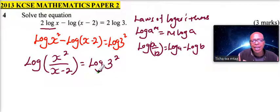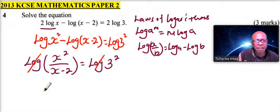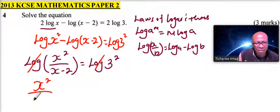Now we can get the anti-logarithm of both sides. Get the argument, just we are canceling the logarithm, getting the anti-logarithm. So we will be left with x squared divided by x minus 2 is equal to 3 squared.